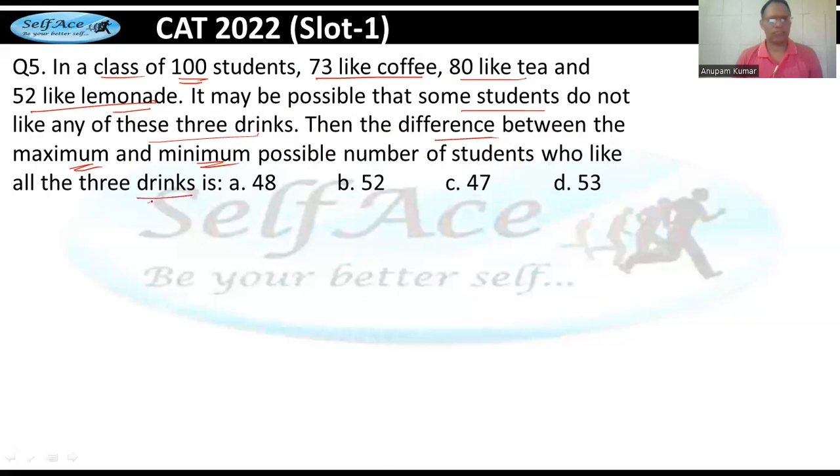This is an easy to medium question. Venn diagram theory makes maxima or minima calculations straightforward. With 100 students mein 73 coffee, maximum normally overlapping comes, but in this case we can directly calculate. 52 lemonade. The difference between who like all three - 52 lemonade karein, 73 jo hai wo coffee karein, laminate coffee aur 80 jo hai wo tea karein.